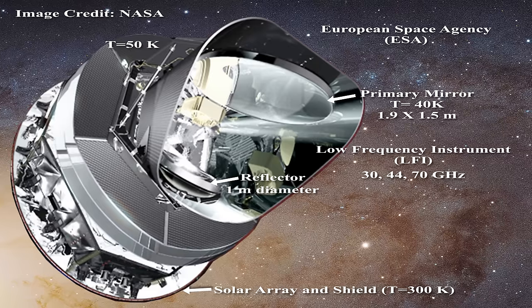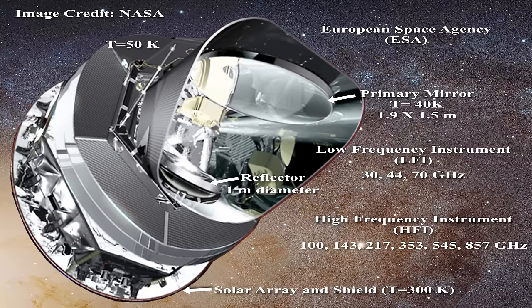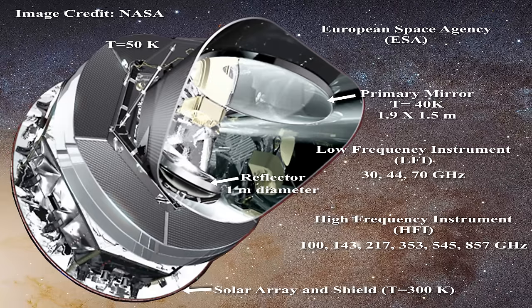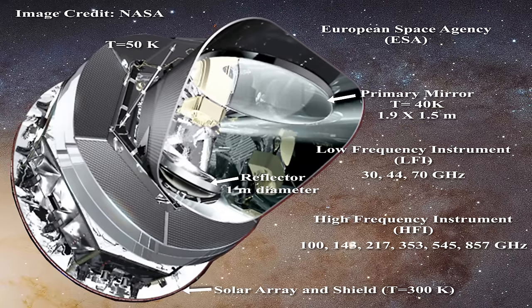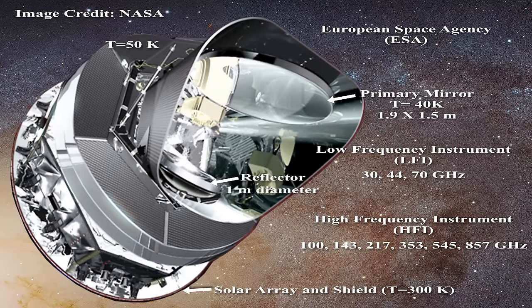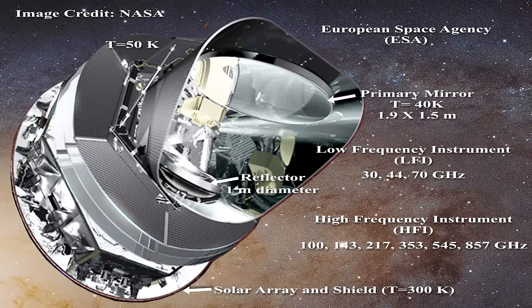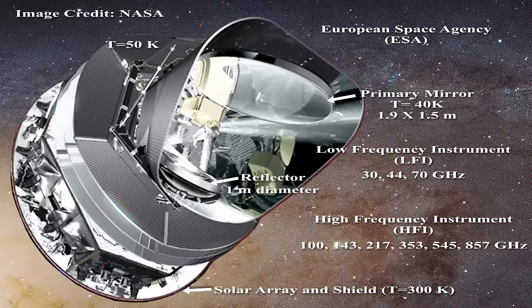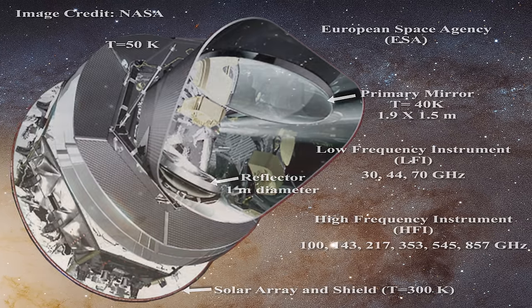In addition to the LFI, the high-frequency instrument, or HFI, sampled frequencies at 100, 143, 217, 353, 545, and 857 GHz. These were sampled using a total of 48 bolometers. Bolometers record electromagnetic radiation by monitoring the heating which takes place in a material through an associated change in resistance. Bolometers are commonly used to sample higher frequencies in place of radiometers. I provide links below to relevant technical papers for those who are interested.